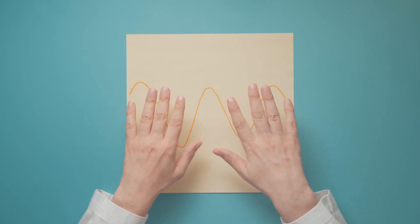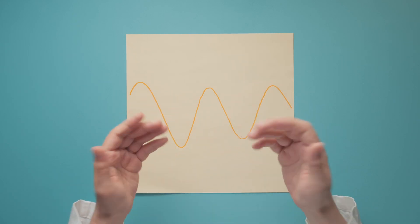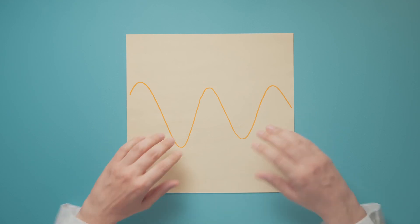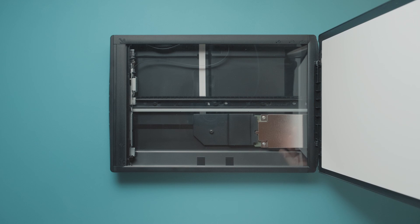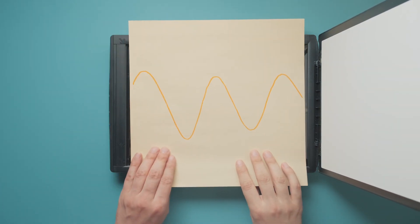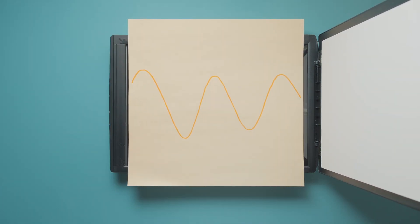If we input this signal into our audio interface or sound card, it will at some point pass an analog to digital converter, or ADC for short. The AD converter takes a measurement of the analog signal and translates it into a number. That's called sampling.